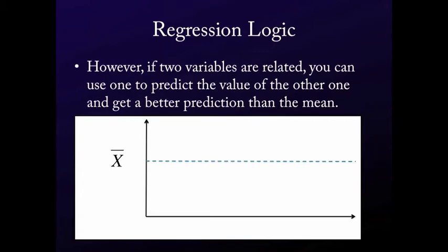So essentially, remember, if we knew nothing about how the two variables related, we'd be stuck having to guess the mean. But if we know, for example, that as one increases, the other one increases, then we're allowed to make a better and more accurate guess.